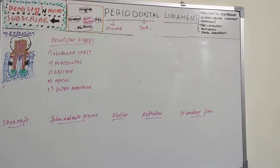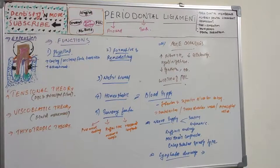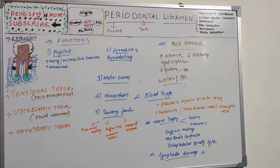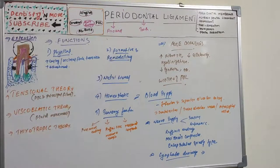Now for the functions of the periodontal ligament. There are five main types: physical functions, formative and remodeling functions, nutritional functions, homeostatic functions, and sensory functions.